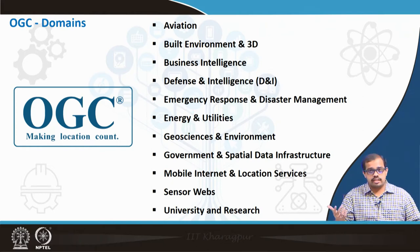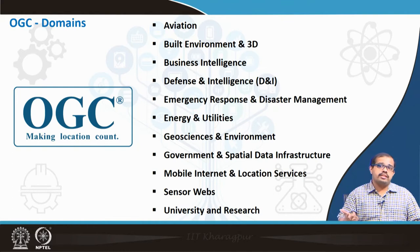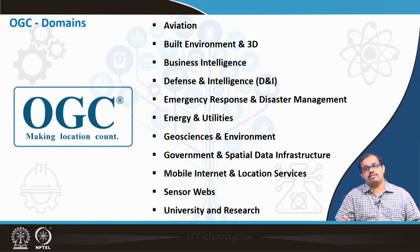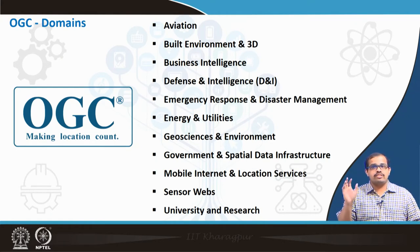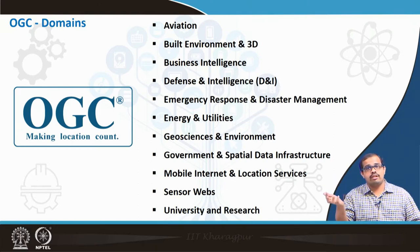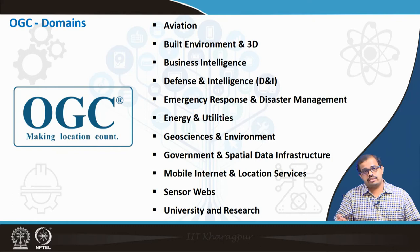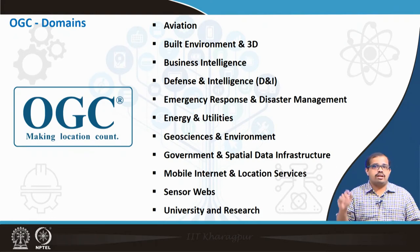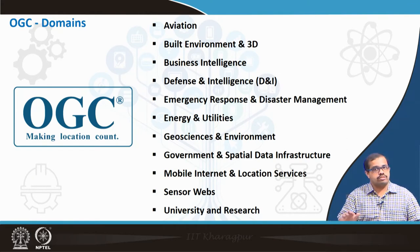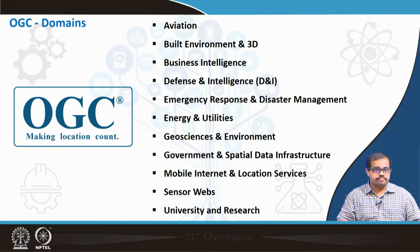Government and spatial data infrastructure is a concept coming up in a large way. For a spatial data infrastructure to be created, the pool of data must interact with each other, meaning data must be standardized — it must know what it is, where it is, and what kind of data is stored. Then mobile internet and location services and sensor webs are also governed by OGC. Universities and research also form part of OGC's domain.